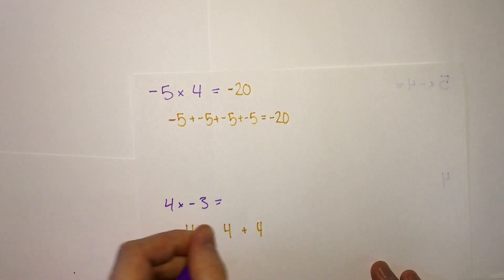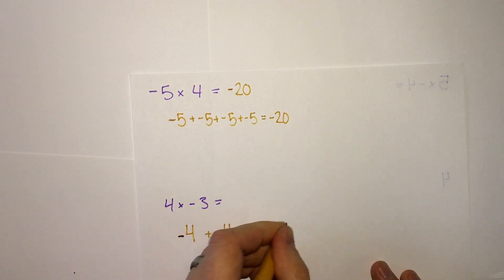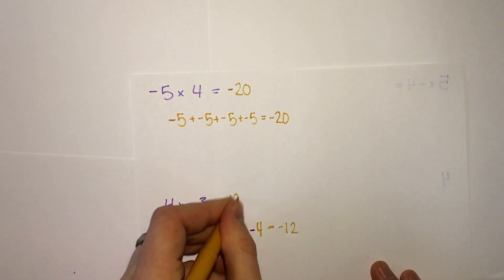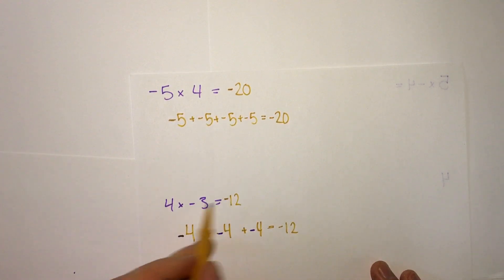So we'd say negative 4 plus negative 4 plus negative 4, and that gets us negative 8, negative 12. Again, 4 times 3 is 12. There's one negative, so the answer is negative.